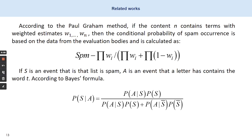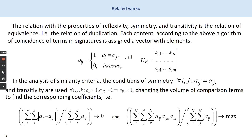Here you can see the formulas of Paul Graham and the bias formula. The relation with the properties of reflexivity, symmetry, and transitivity is a relation of equivalence. The relation of duplication is determined according to the algorithm of coincidence of terms in signatures, which is assigned a vector with elements. In the analysis of similarity criteria, the conditions of symmetry and transitivity are used in this formula, changing the volume of comparison terms to find the corresponding coefficients.